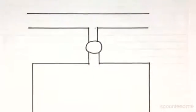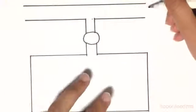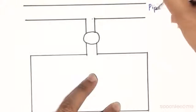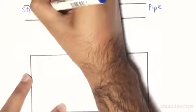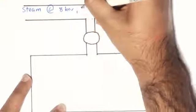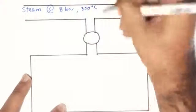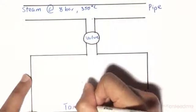So for a visual representation of what is happening, we have the pipe over here. And this pipe has steam at 8 bar and 350 degrees Celsius. This is our valve and this is our tank.